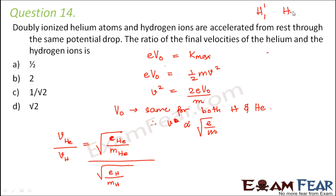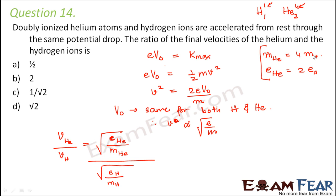For hydrogen the charge is 1 and mass number is 1; for helium the charge is 2 and mass number is 4. So the mass of helium is 4 times the mass of hydrogen, since helium has 4 protons plus neutrons total. The charge on helium is 2 times the charge on hydrogen, because helium has 2 protons whereas hydrogen has 1 proton. Using this, we can rewrite the velocity ratio in terms of these mass and charge relations.